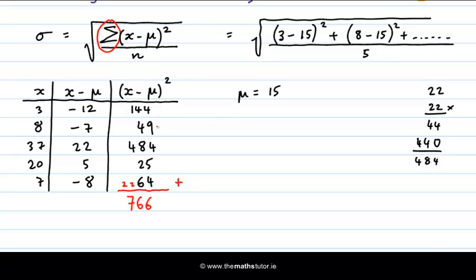So when we add up these squared deviations, it comes to 766. This is the top of our fraction inside the square root sign.